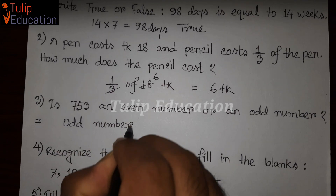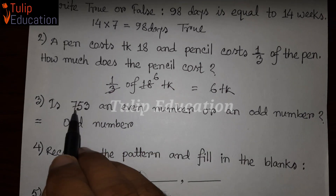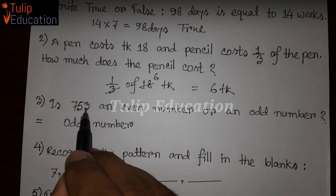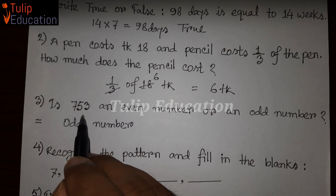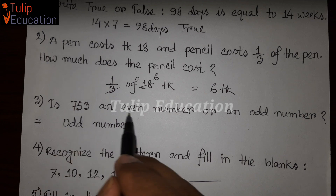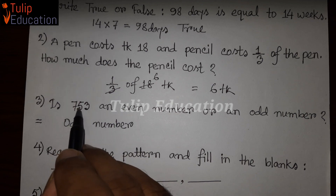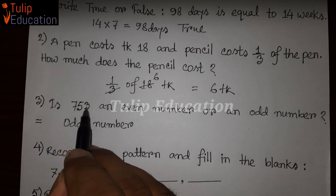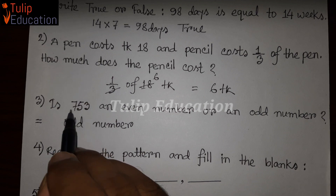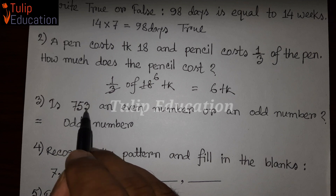If the unit position is 0, 2, 4, 6, or 8, then the number is an even number. Since 753 has unit digit 3, it is not an even number.